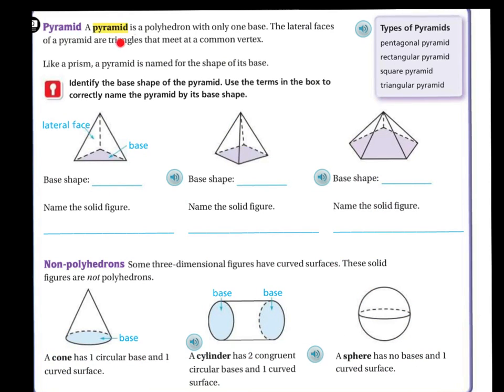So a pyramid. A pyramid is a polyhedron with only one base. The lateral faces of the pyramid are triangles that meet in a common vertex. So like the prism, a pyramid is the name of the shape of its base.